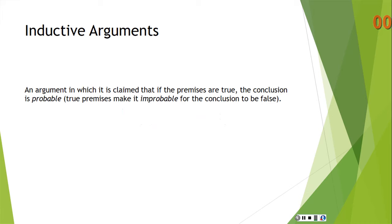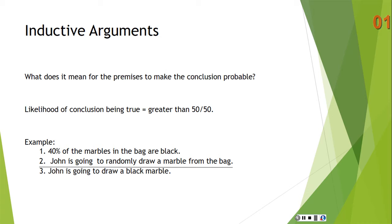What is an inductive argument? This is an argument in which it is claimed that if the premises are true, the conclusion is probable — or probably true. True premises make it improbable for the conclusion to be false. We'll define it in our class as the likelihood of the conclusion being true being greater than 50-50.